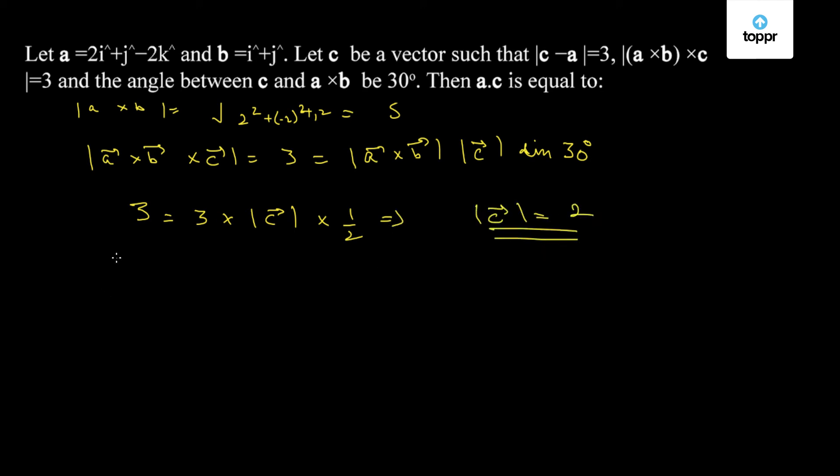Now, we are also given that mod of c minus a is equal to 3. So, squaring on both sides we get mod of c square plus mod of a square minus 2 a bar dot c bar equal to 9.